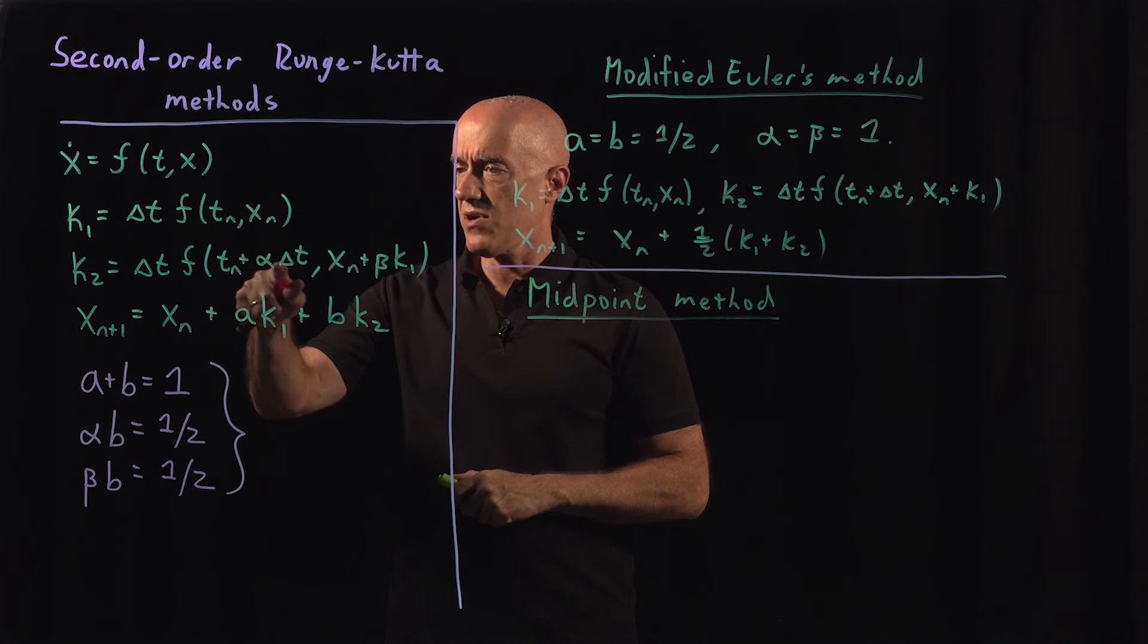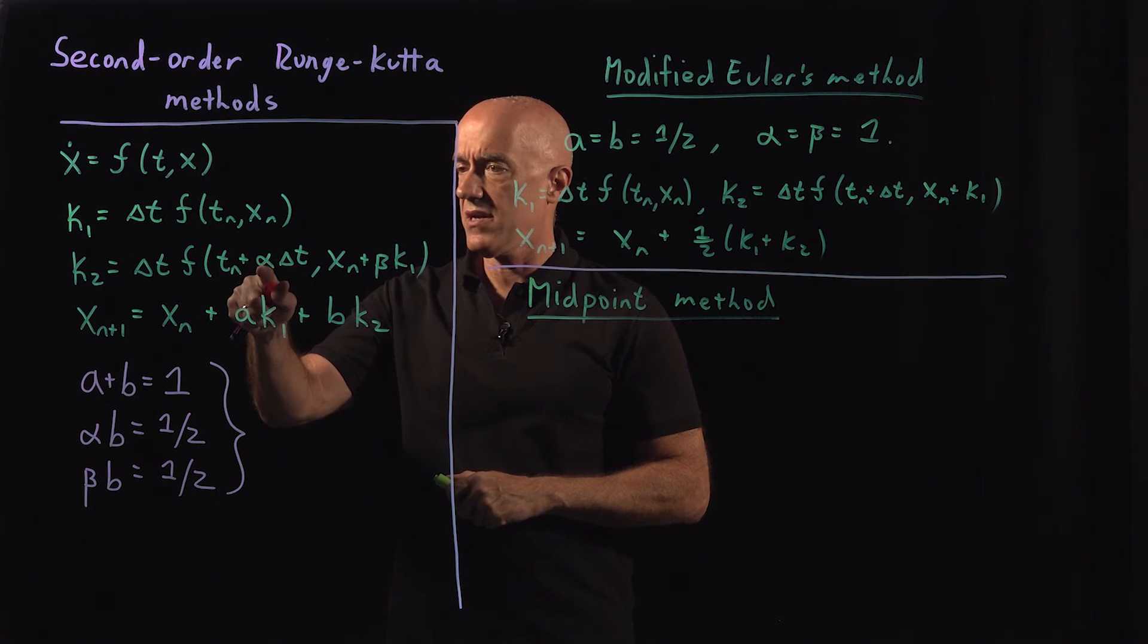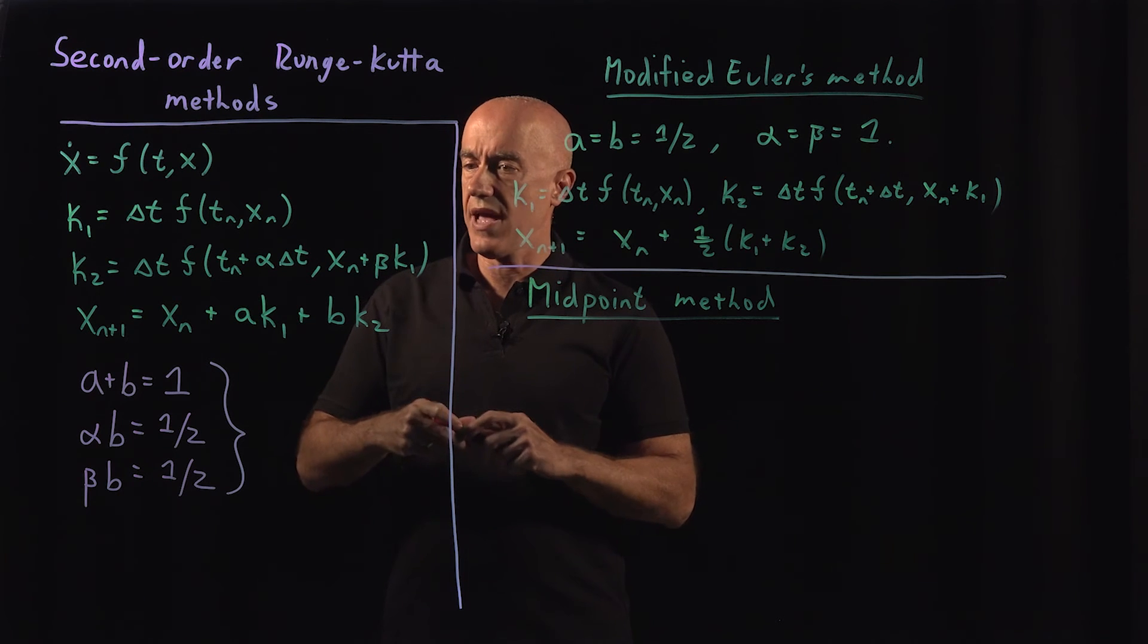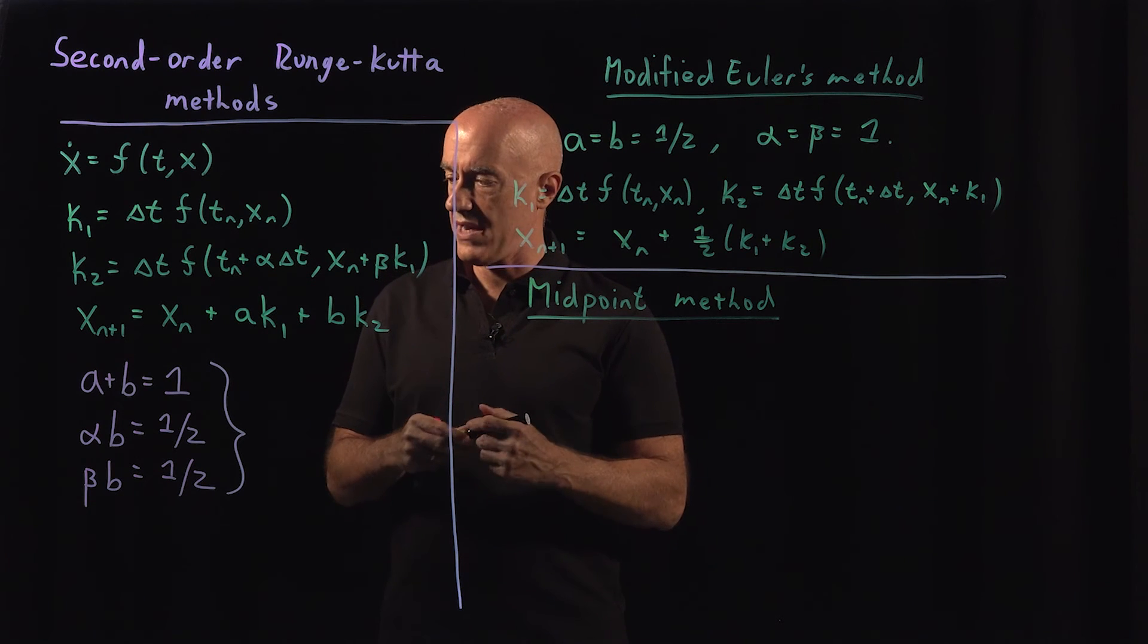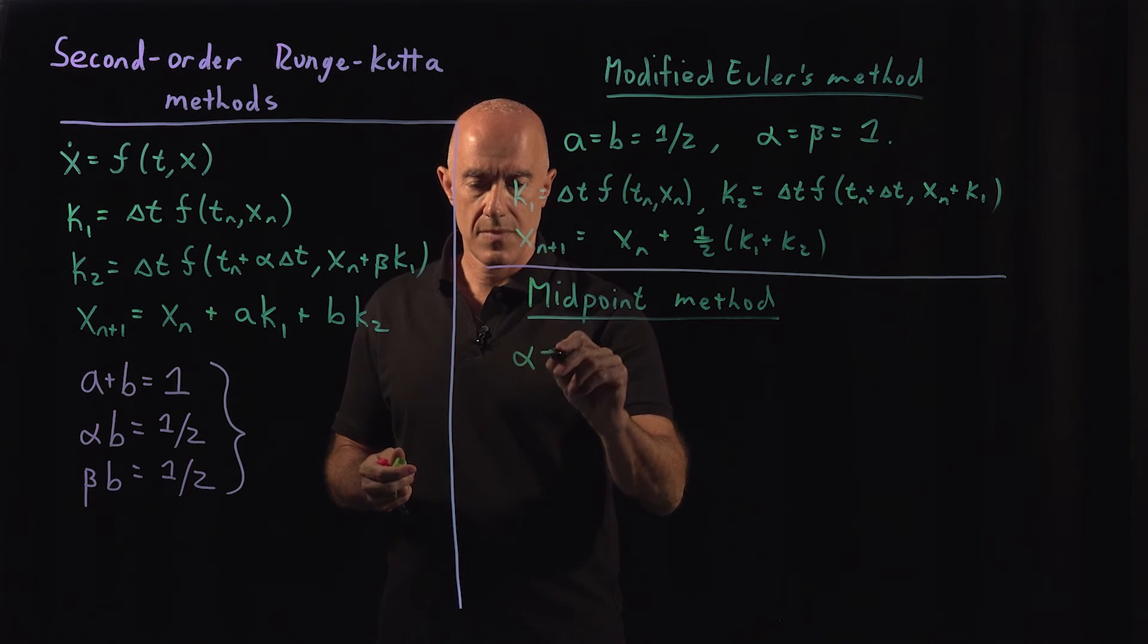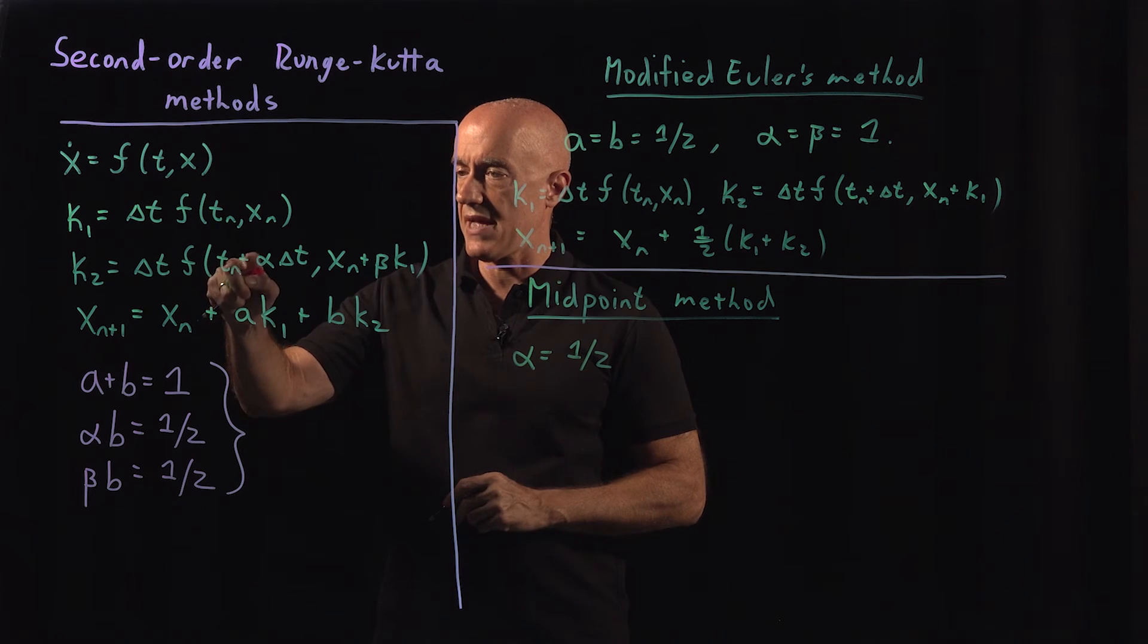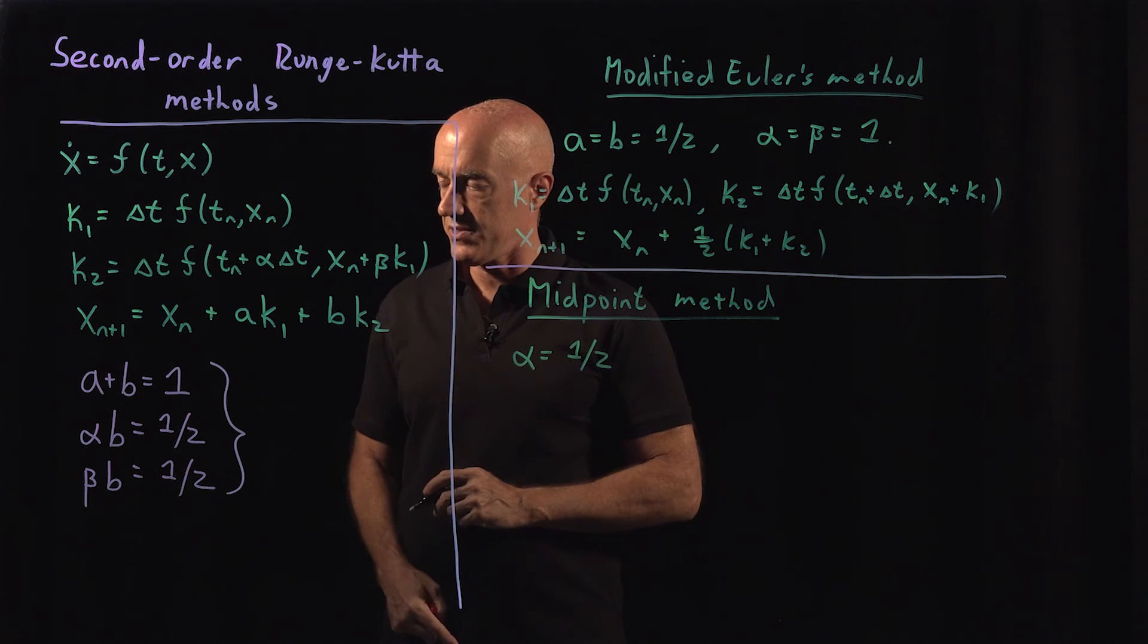Okay, so the middle of the interval corresponds to alpha equal to 1/2, right? So we would like to have alpha equal to 1/2. Okay, so we evaluate at t_n plus 1/2 delta t.